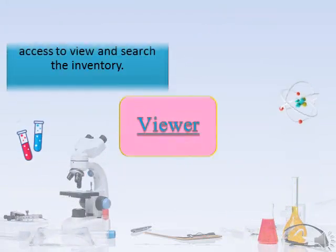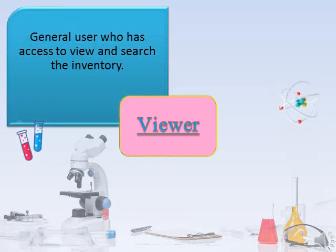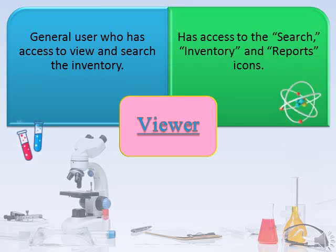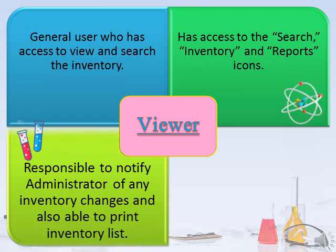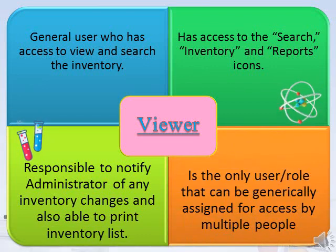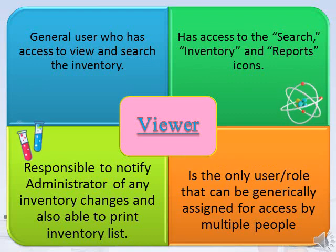Viewer: The viewer is a general user who has access to view and search the inventory. The viewer also has access to the search, inventory, and reports icons, and is responsible for notifying the administrator of any inventory changes. The viewer is also able to print inventory lists. This is the only role in the CMIS system that can be generically assigned for access by multiple people.